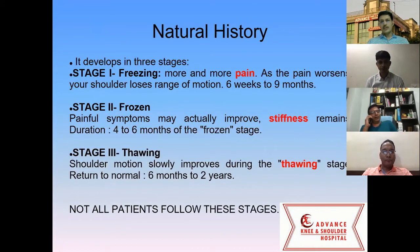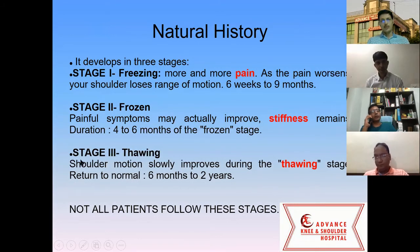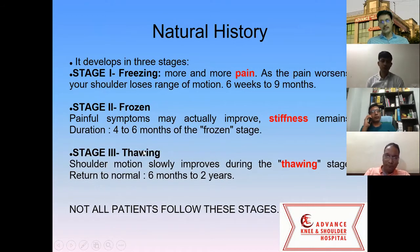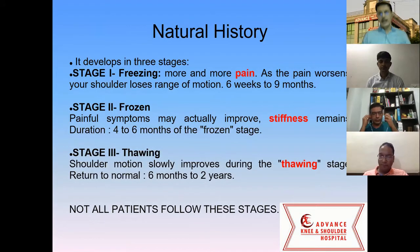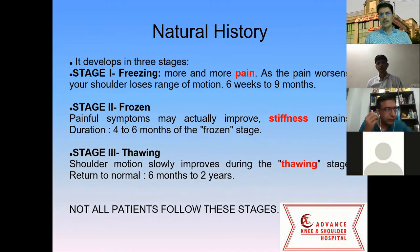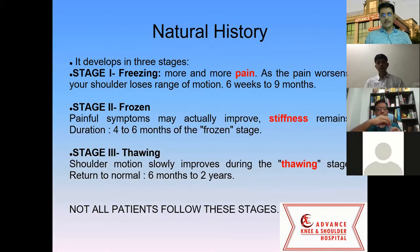The natural history of adhesive capsulitis is in three stages: stage one is freezing, stage two is frozen, and stage three is thawing. This is more of a theoretical staging pattern and not all clinical patients will follow these stages. Initially it starts with pain, then stiffness, and slowly they resolve over time. There is a good association of uncontrolled diabetes and uncontrolled hypothyroidism with the incidence of adhesive capsulitis.